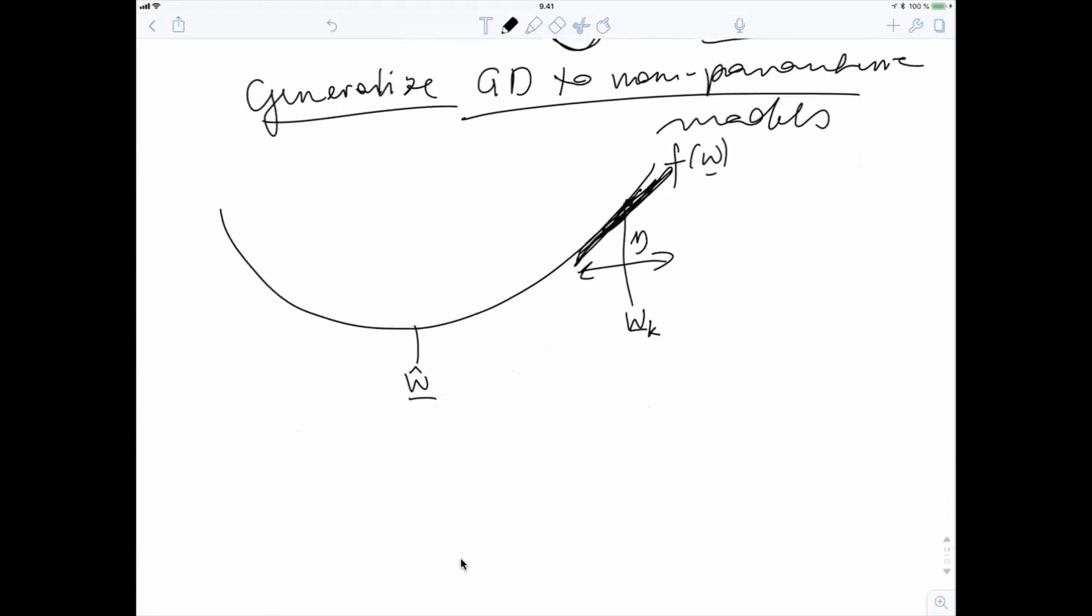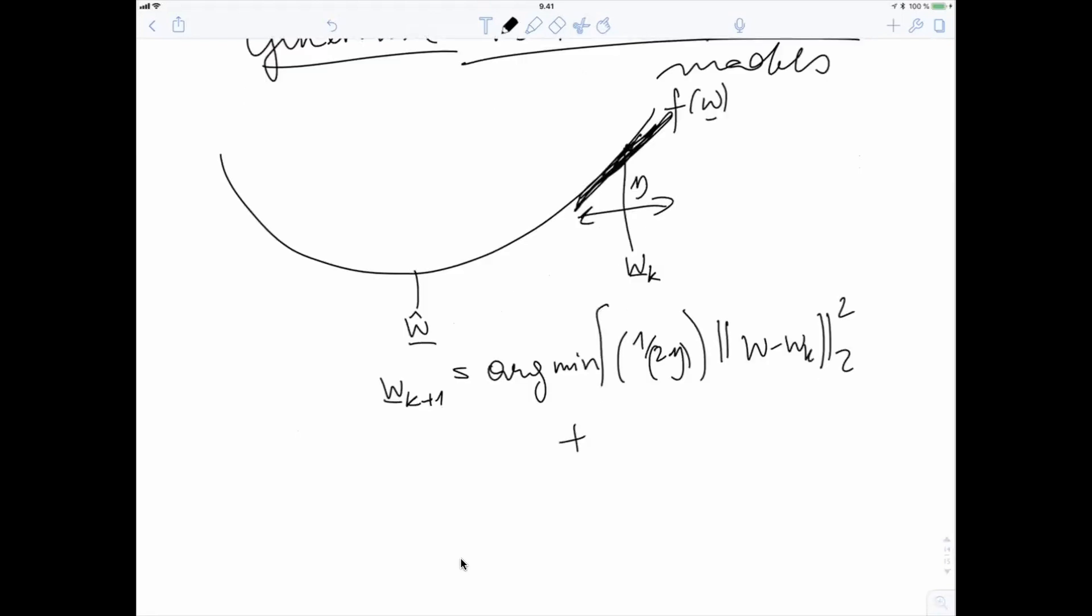So in formulas, in mathematical terms, we can write this as the output of a gradient step is the solution of a minimization problem that looks like this. We have Euclidean norm plus, so this is all the objective function, f of wk plus w minus wk transpose times gradient wk.